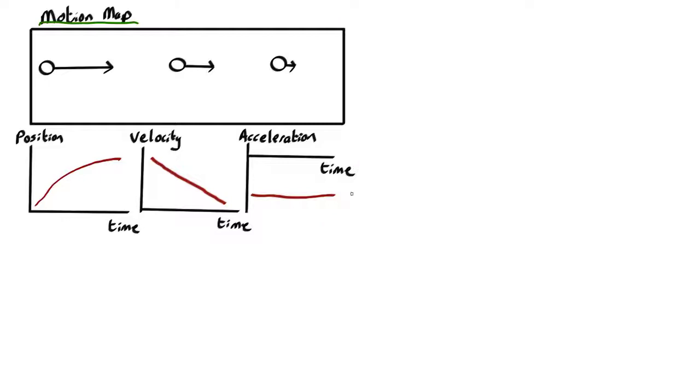Now, are these consistent, or this bunch of graphs, consistent with this motion map? Well, the first thing to do is to be clear in which direction we're considering our position, velocity, and acceleration.